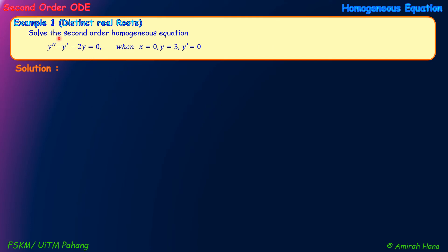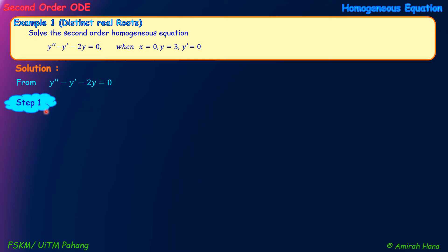Now we look at Example 1 under distinct real roots. The second order homogeneous equation is: Y double prime minus Y prime minus 2Y equals to 0. This is homogeneous because the right-hand side equals 0, and second order because we have Y double prime. The initial conditions are: when X equals 0, Y equals 3, and Y prime equals 0. Step 1: find the characteristic equation, which is M squared minus M minus 2 equals to 0.